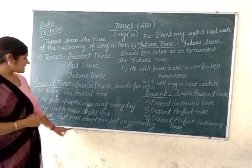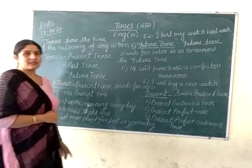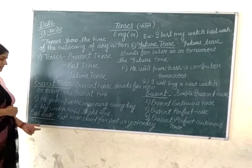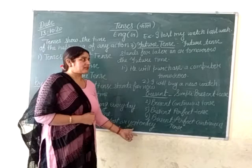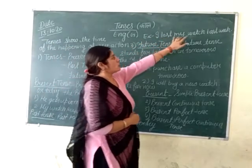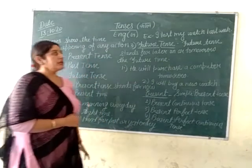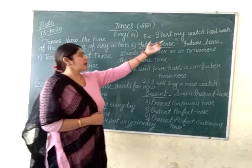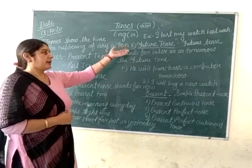Past tense stands for the past or yesterday. Past tense shows what has already happened — the time that has gone by. Example: 'I lost my watch last week.' This action is already completed and belongs to the past.